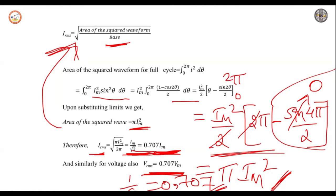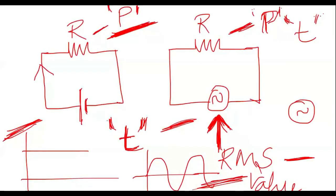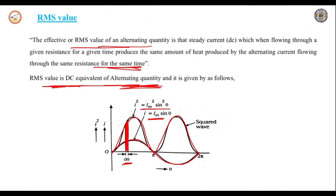If asked to derive for voltage, wherever you have I, replace it with V. At the end, V_RMS = 0.707 × Vm. So whatever AC voltage we apply, if it is 0.707 times the maximum value, then the heat dissipated in the resistor will be the same as the heat dissipated when DC supply is applied. That is why the RMS value is also called the effective value or DC equivalent of the alternating quantity.